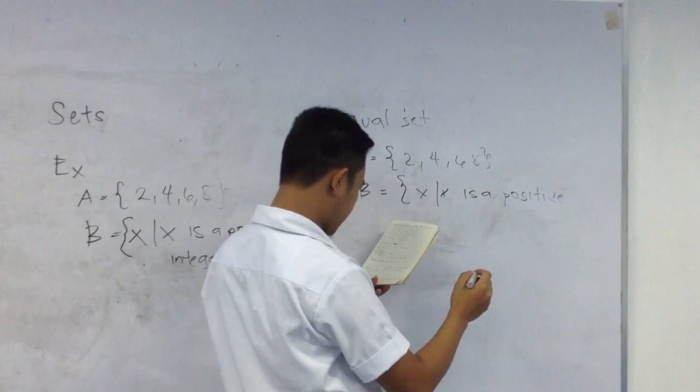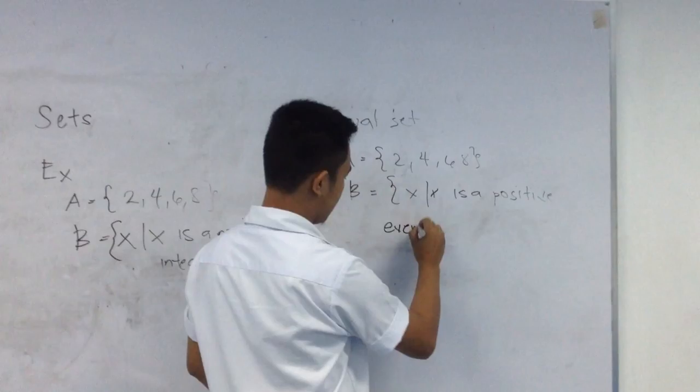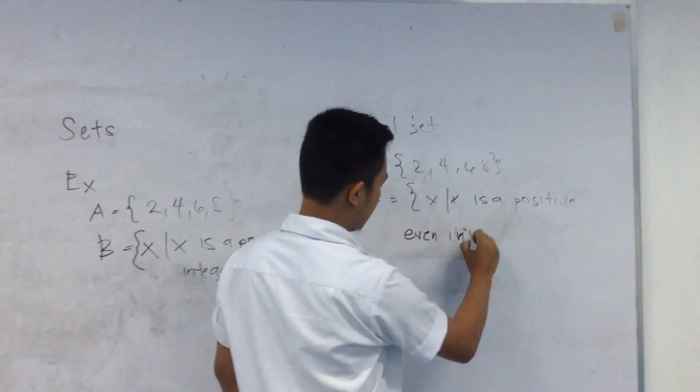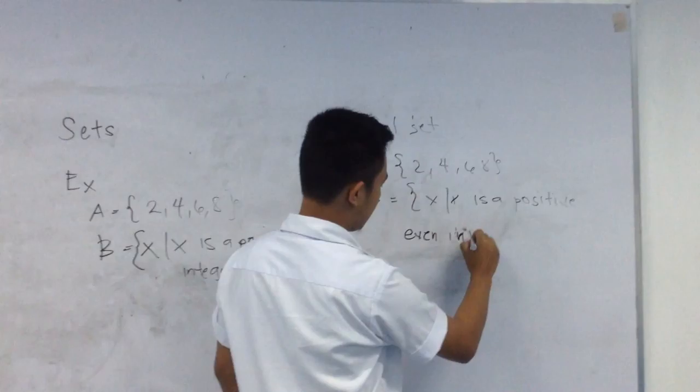Then B is equal to {X | X is a positive even number}. A and B is equal to X.